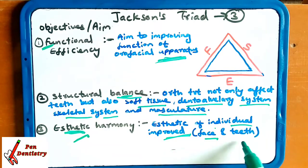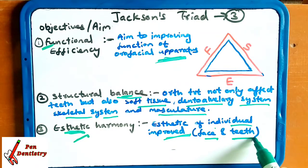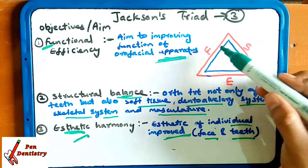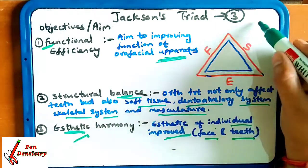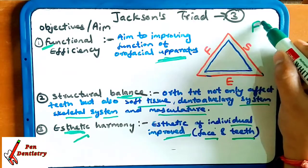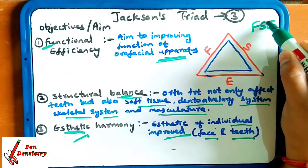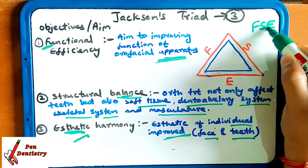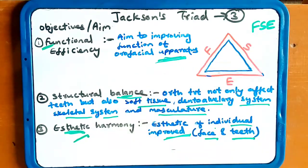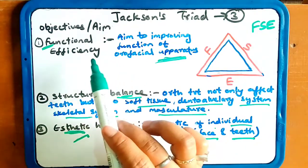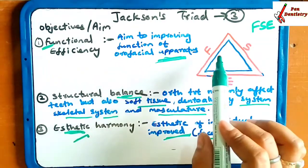So the objectives are summarized as FSE — Functional efficiency is increased, Structural balance is maintained, and Aesthetic harmony is achieved.